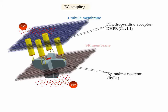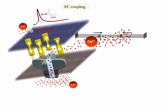The way we think things work is that when the depolarization, the action potential, reaches this region, it changes the conformation of the DHPRs, and this is what in turn triggers the opening of the ryanodine receptor calcium release channel.